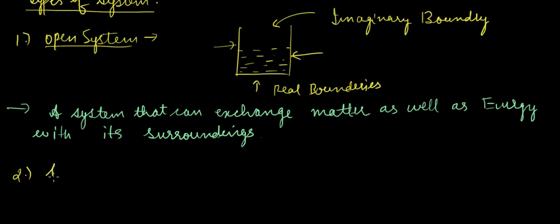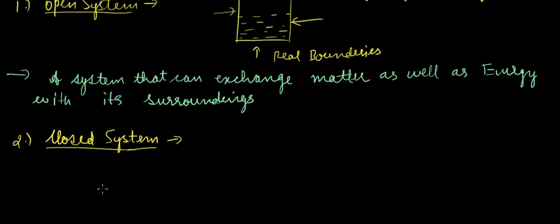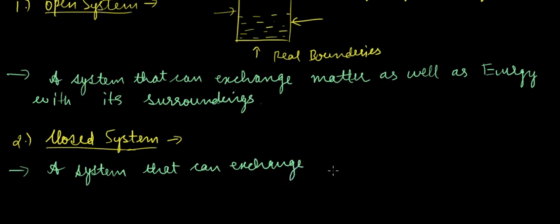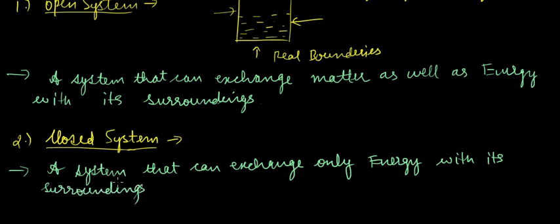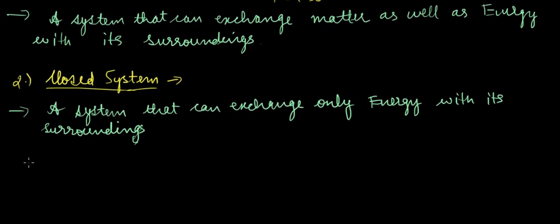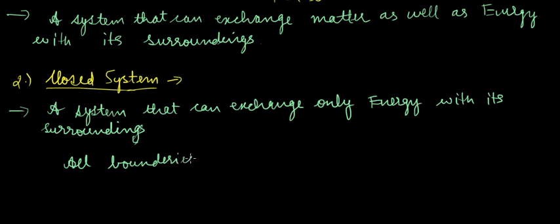A closed system is a system that can exchange only energy with its surroundings. All boundaries are real in a closed system, unlike in an open system where we have an imaginary boundary.